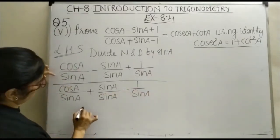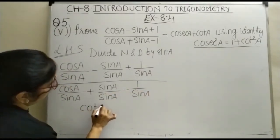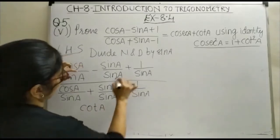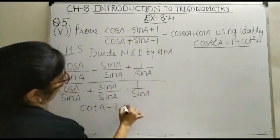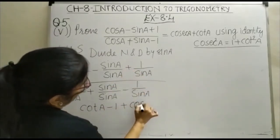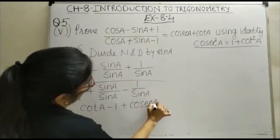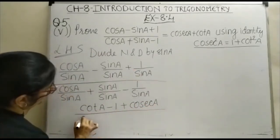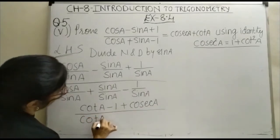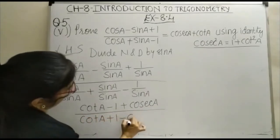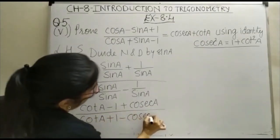Now, this becomes cosA upon sinA. This is again your cotA plus 1 minus cosecA.